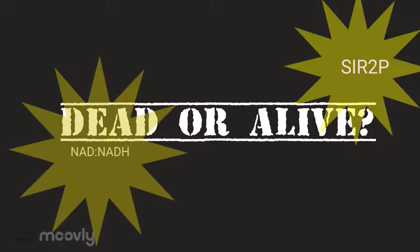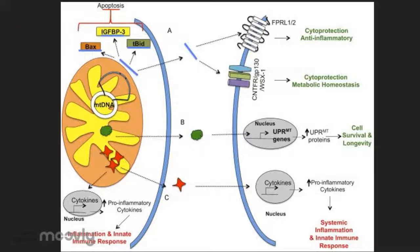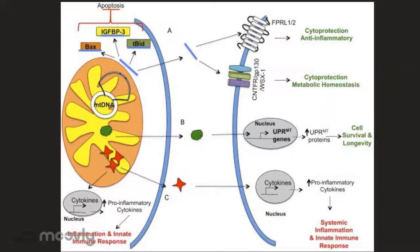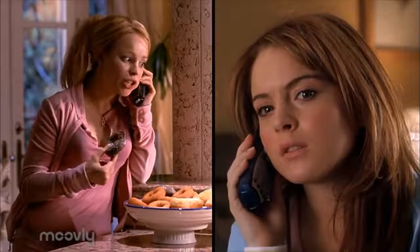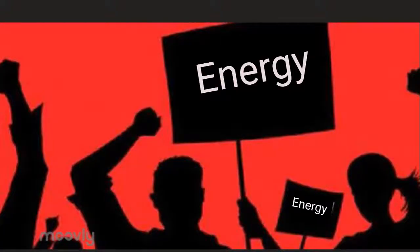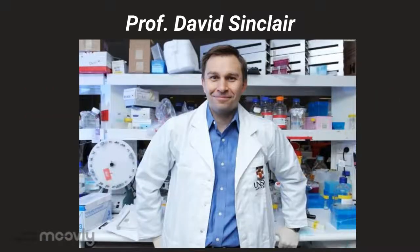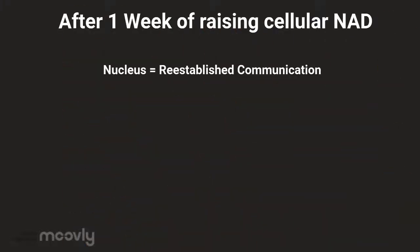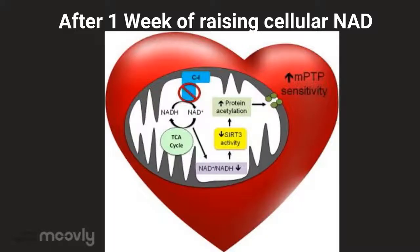One of the main theories today centers around the NADH/NAD ratio and SIR2P activity. This theory centers on the communication between proteins made in the nucleus from genomic DNA and those proteins which travel across the cytoplasm into the mitochondria and help the mitochondria remain healthy. This communication between the two different DNA molecules ensures that sufficient energy is produced to meet the cell's energy demands. This theory was supported by research performed by Professor David Sinclair. After one week of raising the cellular NAD in mice, the nucleus was able to reestablish communications with the mitochondria, and examination of the muscles and heart showed they appeared to have the structural appearance of younger mice.